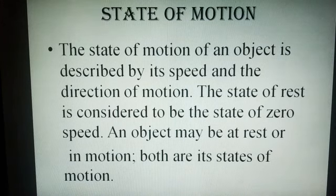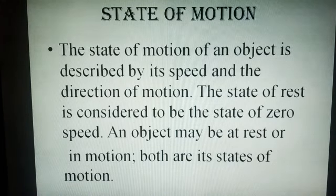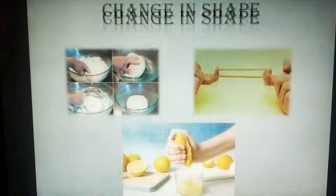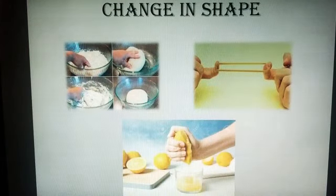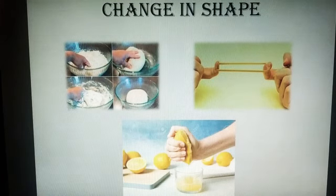The state of motion of an object is described by its speed and the direction of motion. A state of rest is considered to be the state of zero speed. An object may be at rest or in motion — both are states of motion. We cannot say a resting object is not in motion; both rest and motion are motion states.